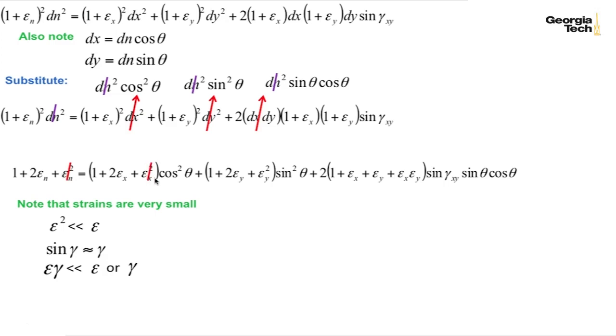Another one we'll neglect. Another one we'll neglect. We have epsilon x times sine of gamma xy, which is about gamma xy. So you have epsilon times gamma, very small strain. We'll cancel that term. We'll cancel that term as well. And finally we'll cancel this term. And when we do that, we also can say that sine of gamma xy is equal to gamma xy. This is the result we arrive at.